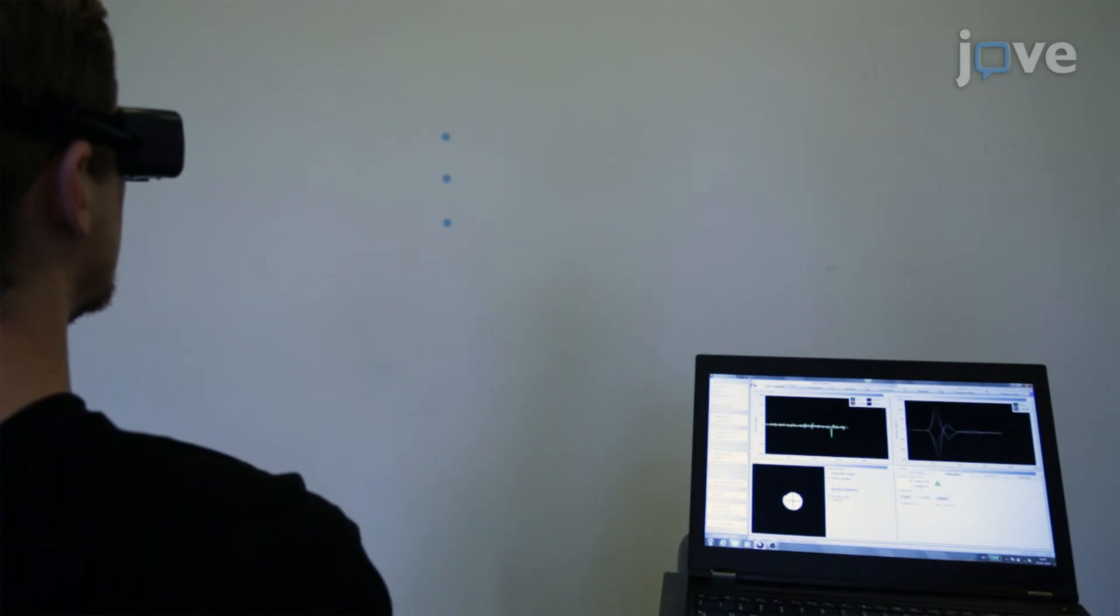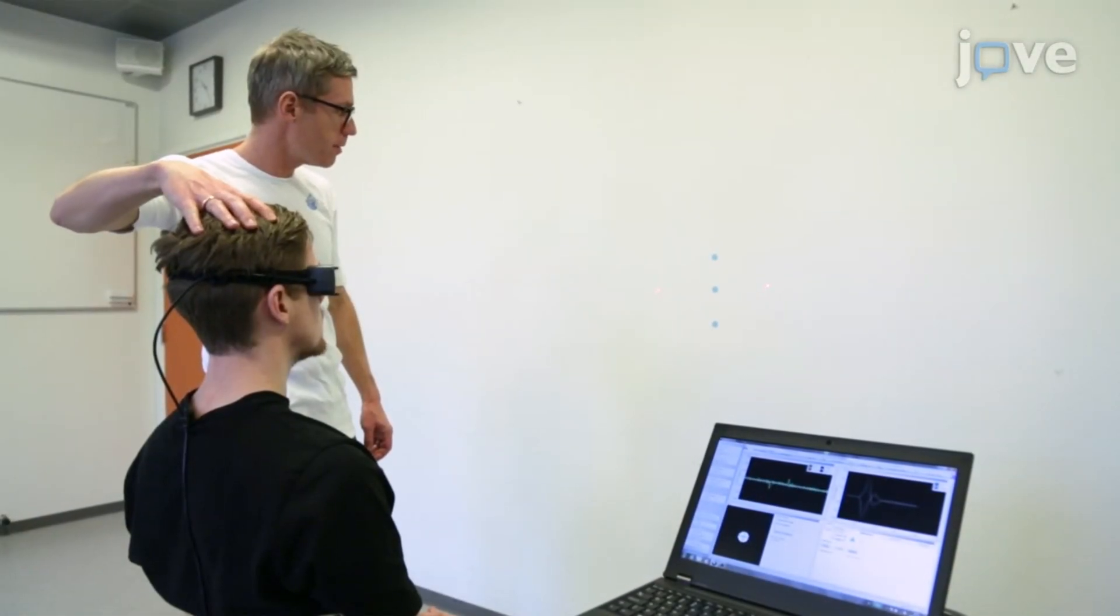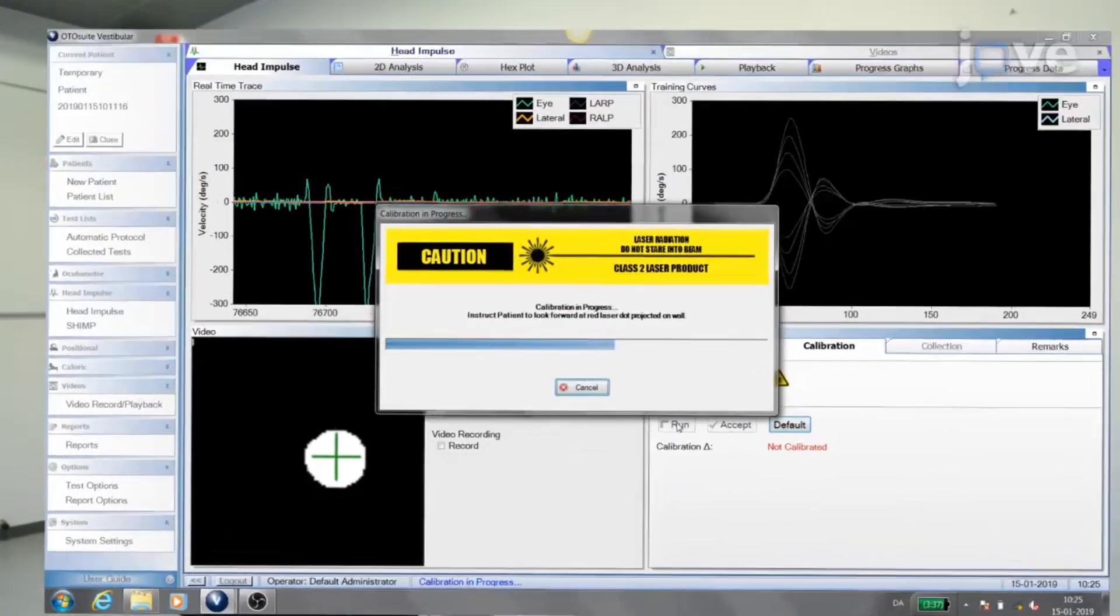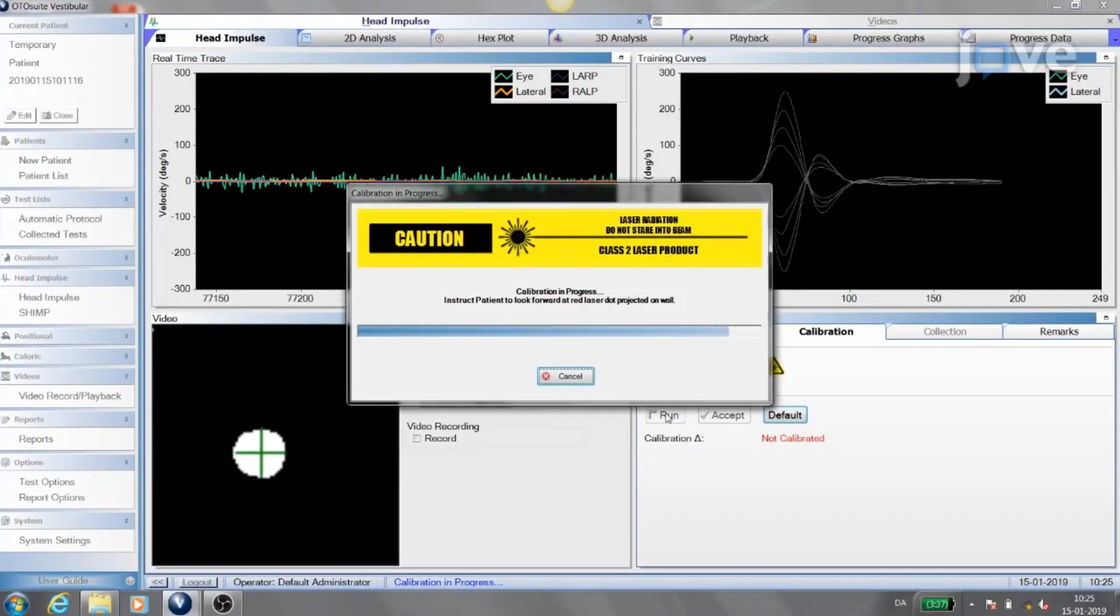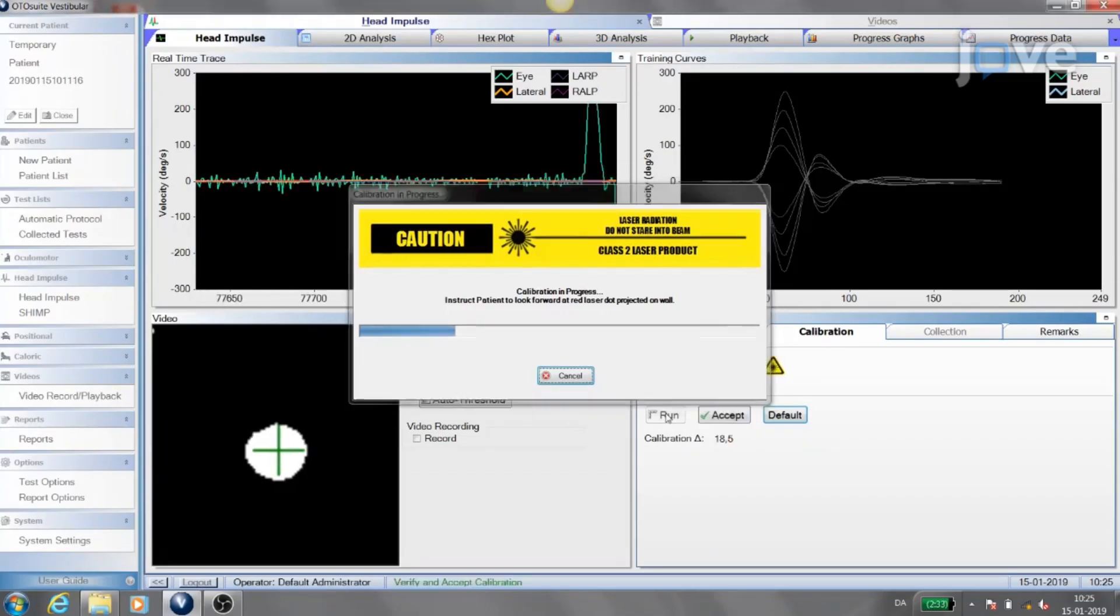For calibration of VHIT system B, first turn the lasers on. Then ask the participant to move their head to position the left and right laser dots on each side of the fixation dot equidistantly. Tell the participant to keep their head in that position, and ask them to follow the visible laser beam dot by moving their eyes only. Check the calibration by having the participant stare at the fixation dot. Move their head side to side about 10 degrees.